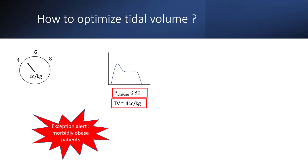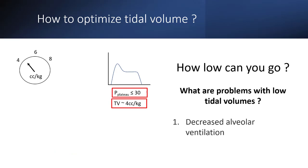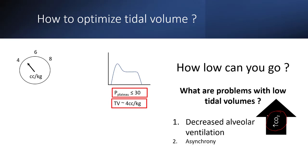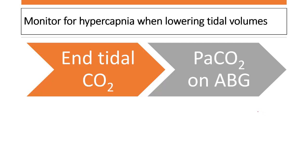Problems associated with low tidal volumes include decreased alveolar ventilation, causing CO2 levels to increase and subsequently a drop in pH. They can also cause patient-ventilator asynchrony. When dropping tidal volumes, make sure to monitor CO2 — either by measuring end-tidal CO2 or measuring PaCO2 on the ABG.